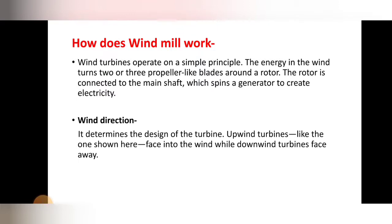So let's see how does a windmill work. As we have seen what wind energy is, why we require wind energy, and how we convert wind energy into mechanical energy or electrical output — those points we have discussed. Now, a wind turbine operates on a simple principle: the energy in wind turns two or three propeller-like blades around a rotor.